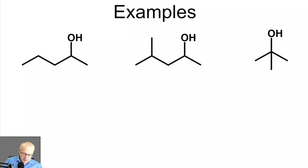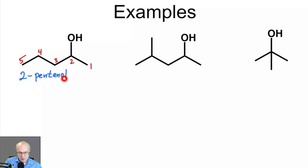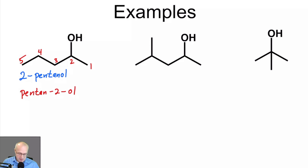Here we have our first example — it has an OH group. We need to number the carbon chain closest to the OH: 1, 2, 3, 4, and 5. The OH is on carbon number 2. The old IUPAC way would have been to say 2-pentanol, where the E from pentane has been replaced with -ol. The more modern IUPAC way is pentane-2-ol. That's the modern way you should learn, but be familiar with the old way because you still see it a lot.